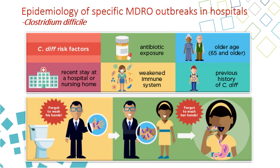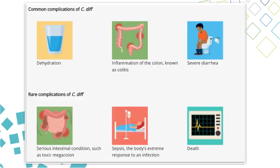One slide shows how C. difficile is transmitted from contaminated bathrooms by those who do not wash their hands, passing it to other people. Complications of C. difficile include dehydration, inflammation of the colon, severe diarrhea, and serious intestinal conditions including toxic megacolon, sepsis, and sometimes death.